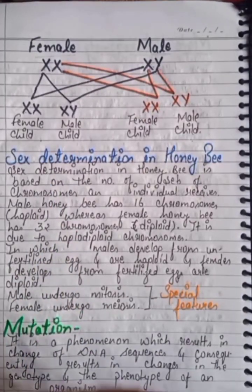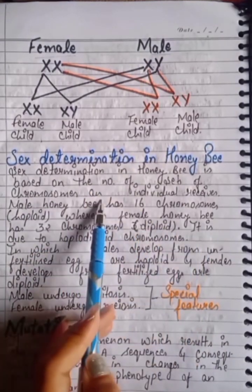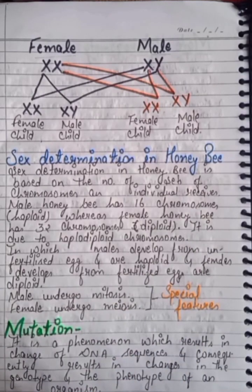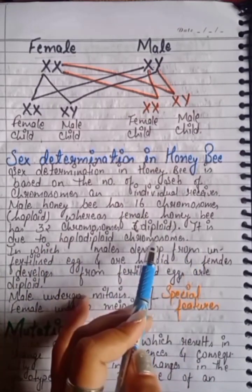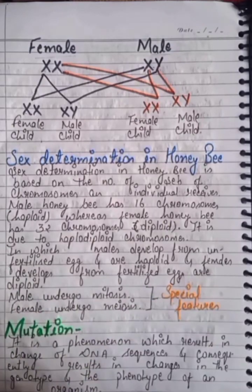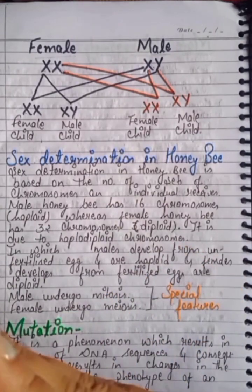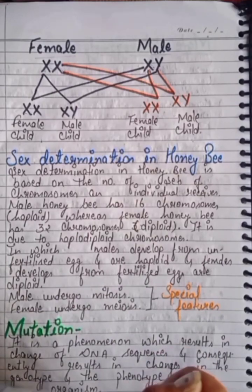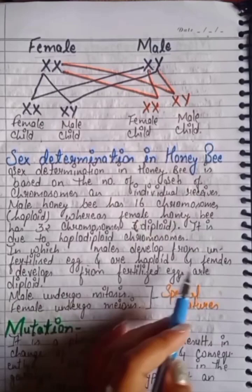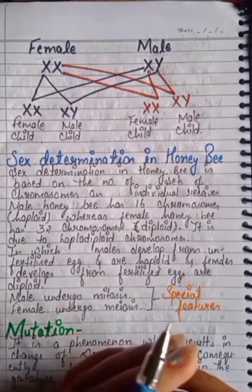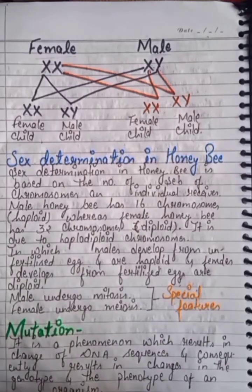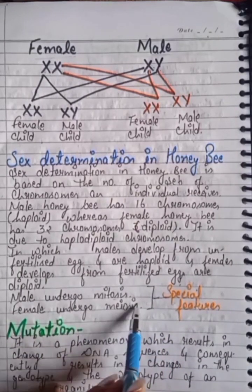Sex determination in honeybees is based on the number of sets of chromosomes an individual receives — this is called the haplodiploid system. Male honeybees have 16 chromosomes (haploid), whereas female honeybees have 32 chromosomes (diploid). Males develop from unfertilized eggs and are haploid, while females develop from fertilized eggs. Males undergo meiosis whereas females undergo mitosis.